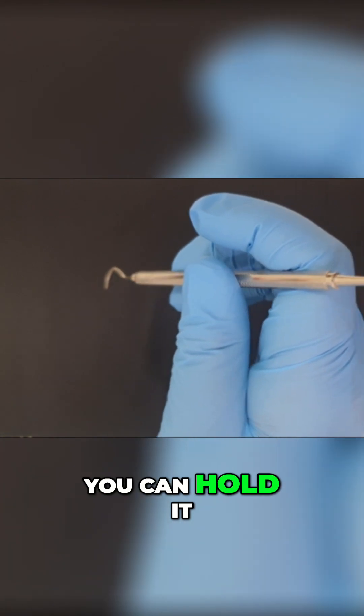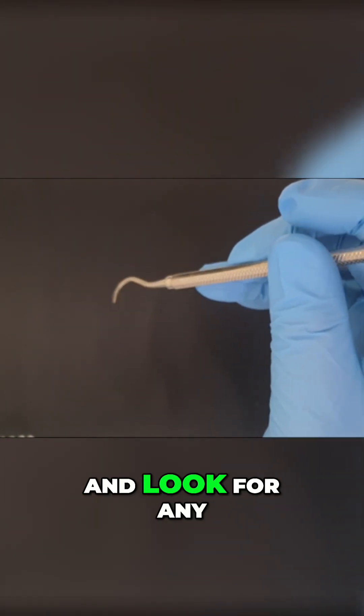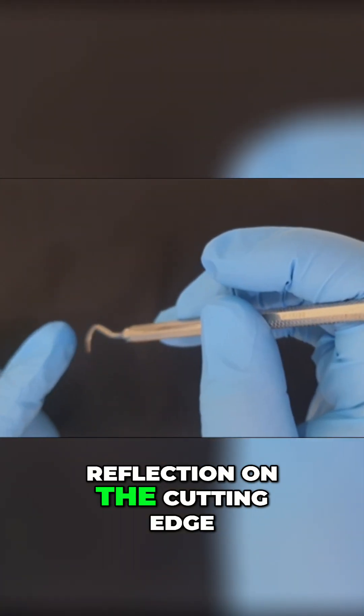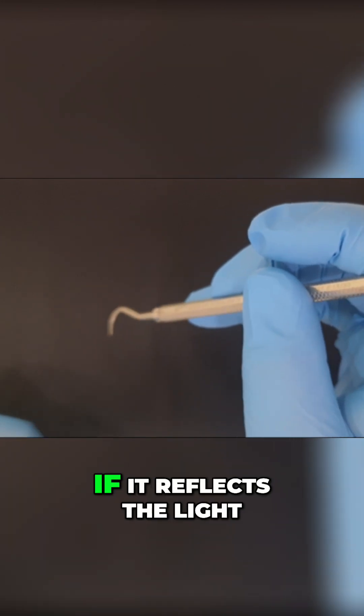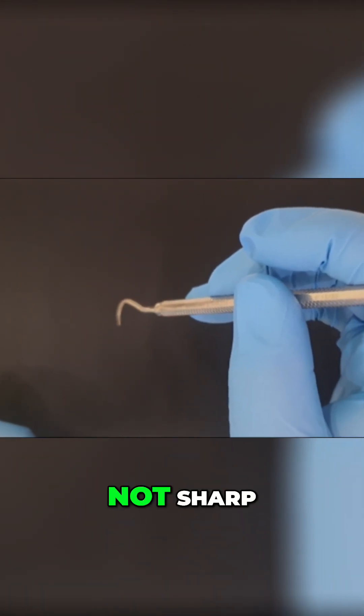One, you can hold it against the light and look for any reflection on the cutting edge. If it reflects the light, then the instrument is not sharp.